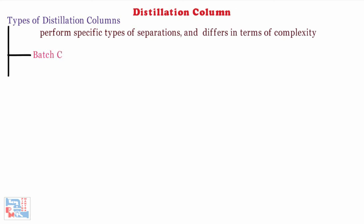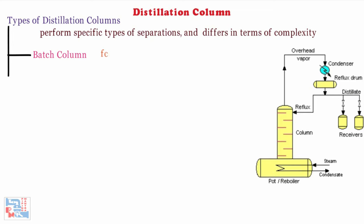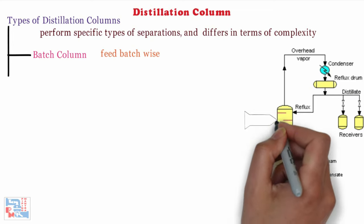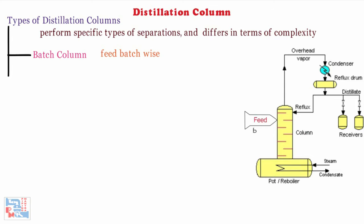First comes batch columns. In batch operation, the feed of the column is introduced batch wise. That is the column is charged with the batch and then the distillation process is carried out. When the desired task is achieved, a next batch of feed is introduced.